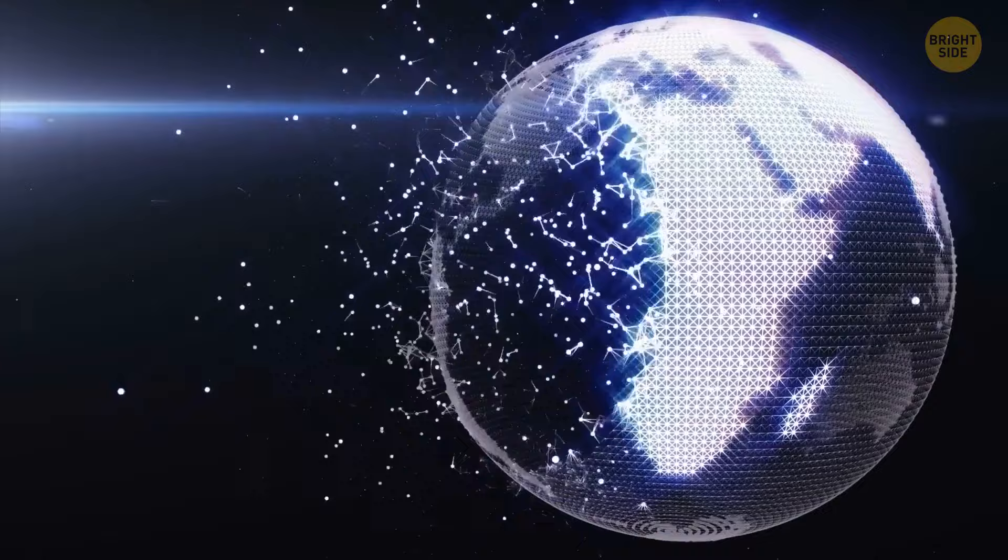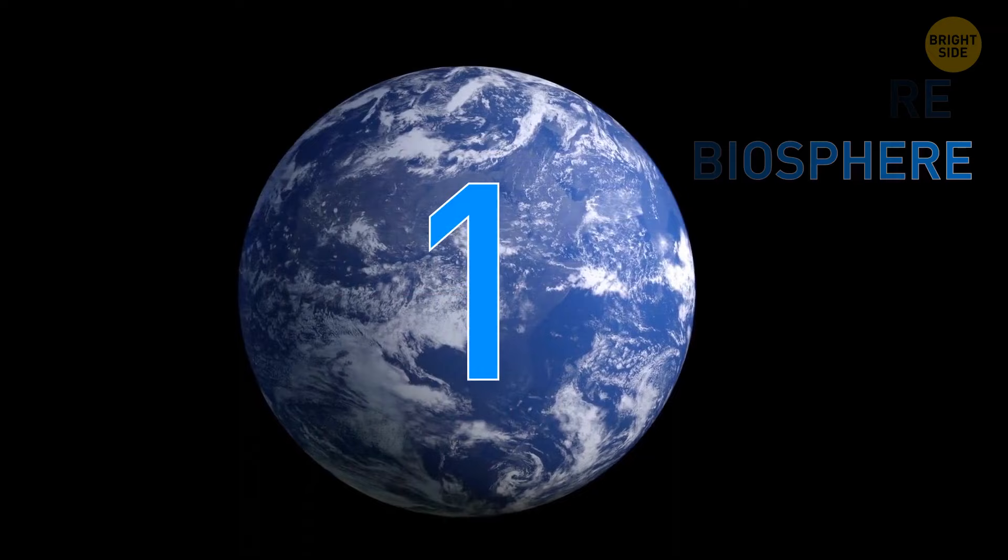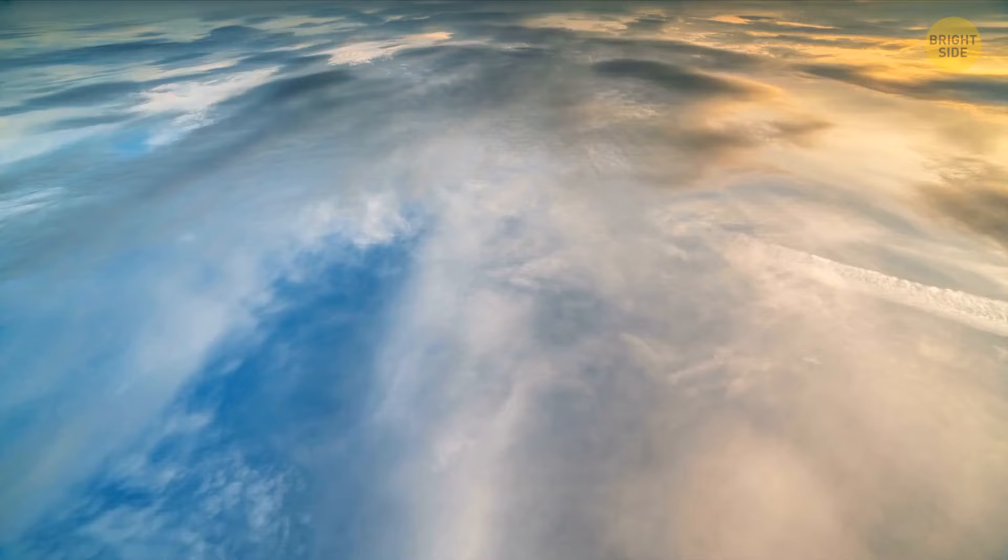The first stage is what we call the immature biosphere. It's when life first started on Earth, billions of years ago. Only microbes were there on the bare land without any vegetation. There wasn't any global feedback, which means these microbes couldn't yet affect Earth, its atmosphere, or other systems in any way.